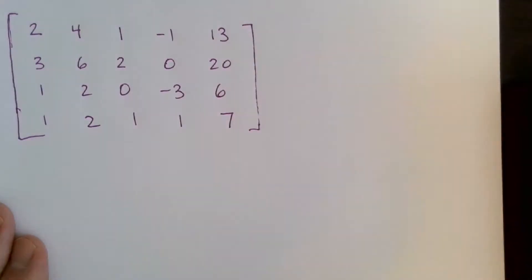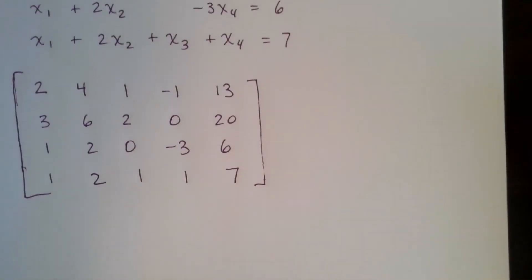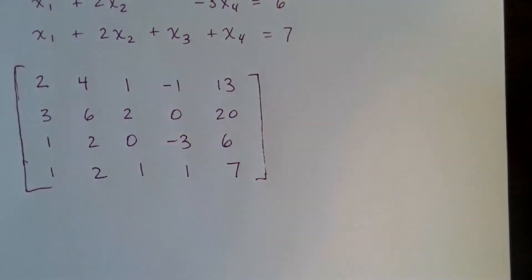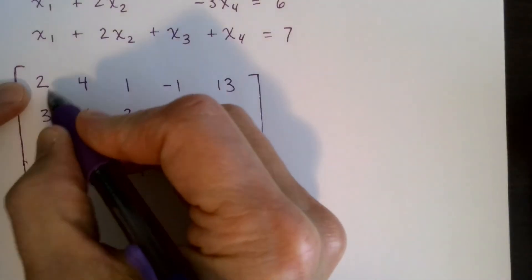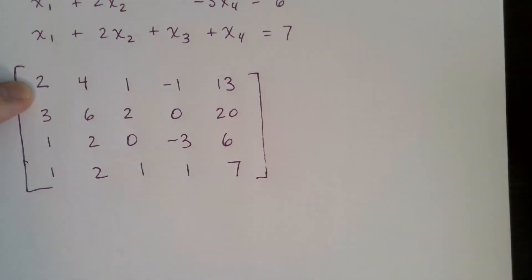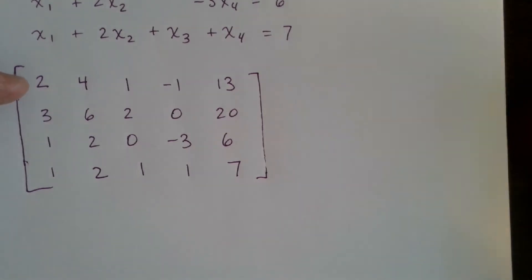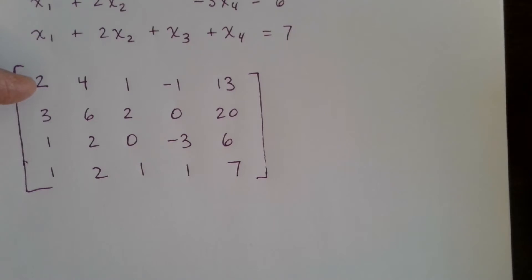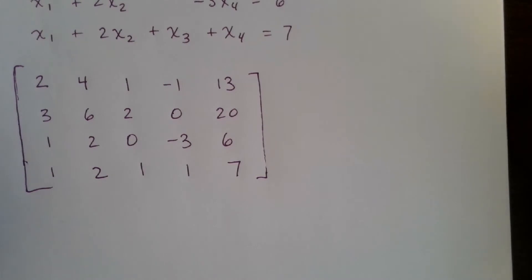In the Gauss-Jordan method, we start by getting a 1 in the first row, first column position. The algorithm reads: look at the first row, first column entry — is it a non-zero quantity, like 2? Yes. Then multiply that row by the reciprocal. If it is zero, the algorithm says: look below and find the first non-zero entry, then interchange those rows.